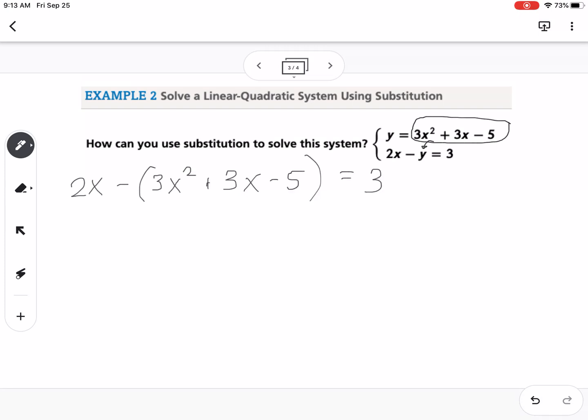So then I'm going to distribute the negative, so this would be 2x minus 3x squared minus 3x plus 5 equals 3. Then what I need to do is, this is a quadratic because I have an x squared in there, so I want to get everything over to one side, combined like terms, but I want that x squared part to be positive, so I'm going to move it all to the right-hand side.